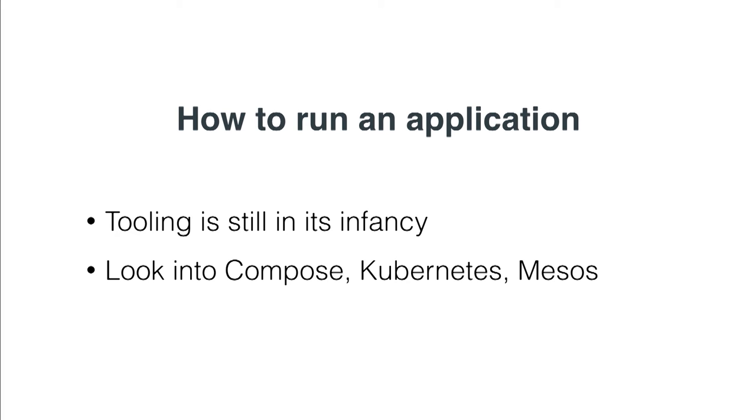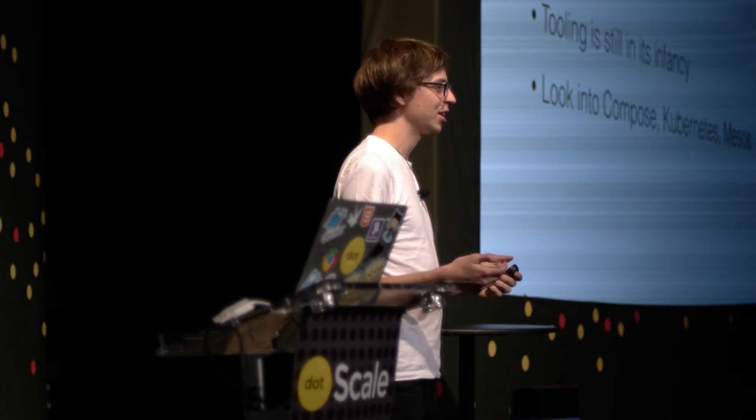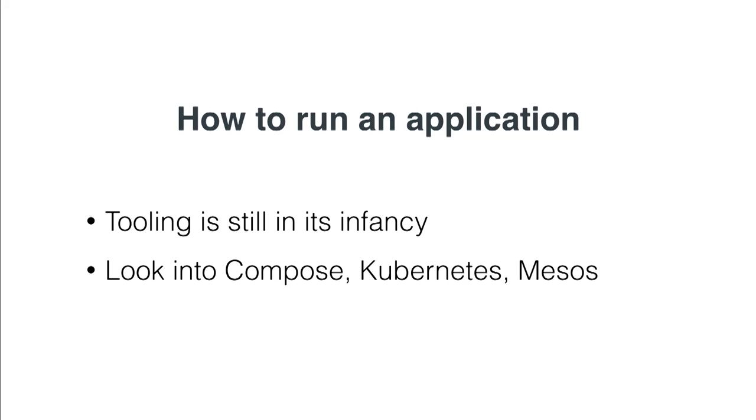So that's how to do a bunch of simple things — things that were specifically trivially parallelizable. It gets more complicated when you want to run an application, say a web application serving a website with a database you need to connect to. These are entirely possible to run on these types of systems, but the tooling is still not that mature. Lots of people are doing this, but you still have to figure out your own way to a certain extent. If you're interested, look into Compose — also called Fig — which is a tool for running stuff on your laptop but you can also point it at Swarms. Kubernetes and Mesos also have constructs for defining and running applications.